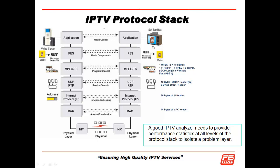We'll start with the video server here at the top left. We're going to packetize that video, or create what's called a PES, or packetized elementary stream. We're going to put it into a transport stream, which is made up of 188-byte packets. Each one of these has a sync byte that tells us where the next packet is. It also has a continuity counter that allows us to reassemble these in the correct sequence.